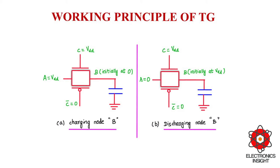Now let us understand in detail how the capacitance at the drain side is getting charged or discharged. The behavior of the transmission gate in the on condition for different inputs can be analyzed. Let us set A equal to one. The control signals are fixed: C equals VDD and C-bar equals zero, so the transmission gate is acting like a closed-state switch.